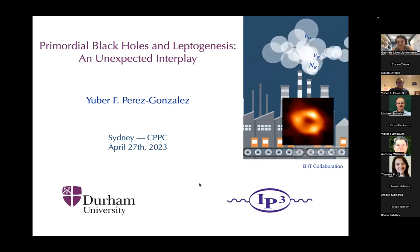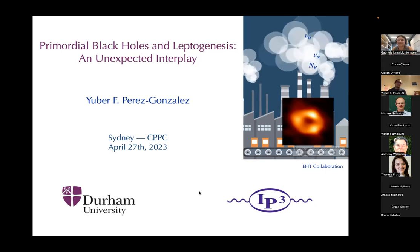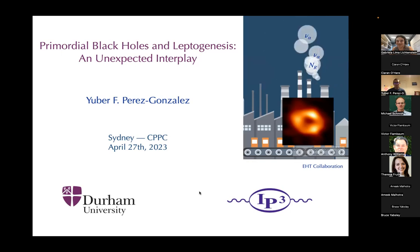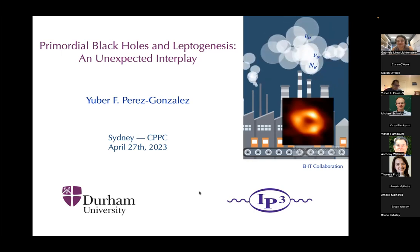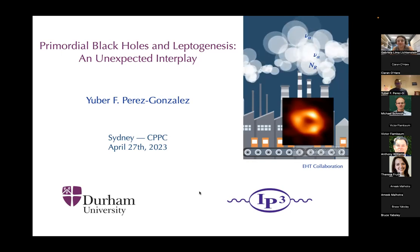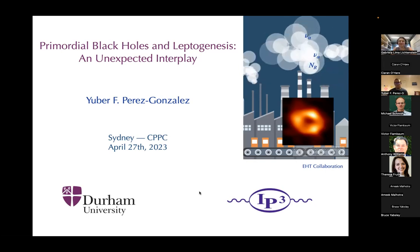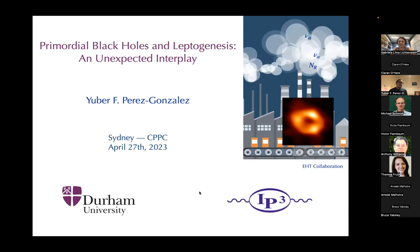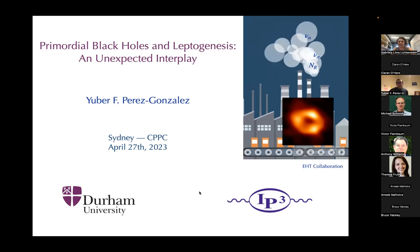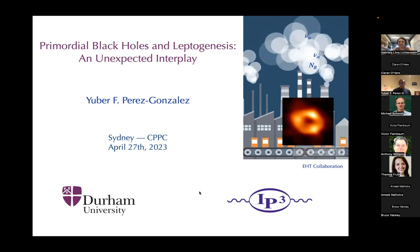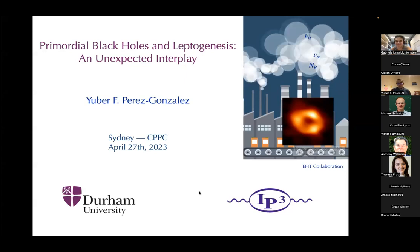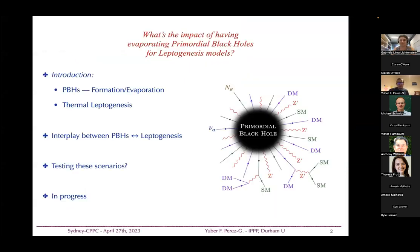What I would like to discuss is the interplay between primordial black holes and leptogenesis, because I think it's quite interesting to think that if we have a population of primordial black holes in the early universe, they could modify what we expect from many particle physics processes — and among those, leptogenesis, if it occurred.